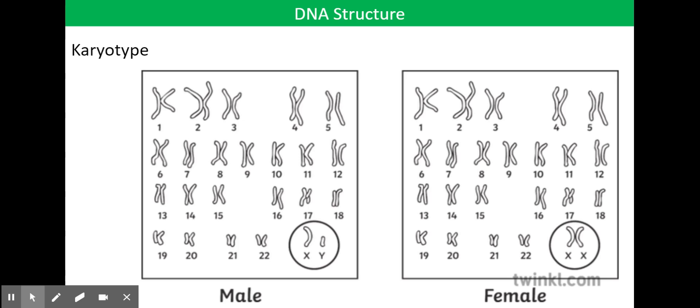However, the 23rd pair of chromosomes is known as the sex chromosomes. Males have one X chromosome and one Y chromosome. Meanwhile, females have two X chromosomes. And that is what makes males and females different.